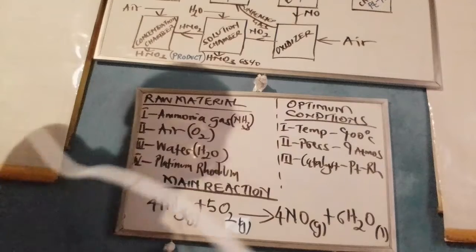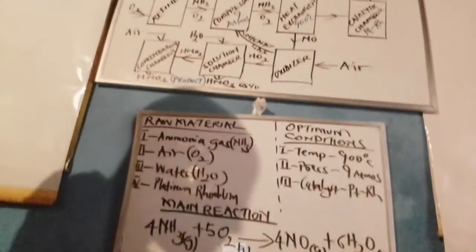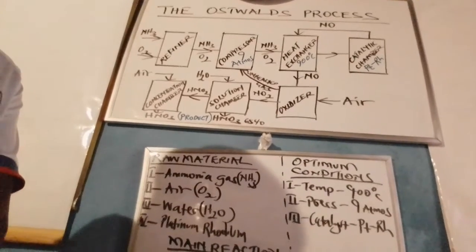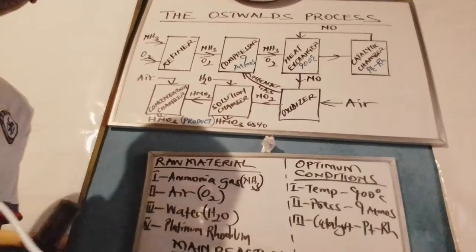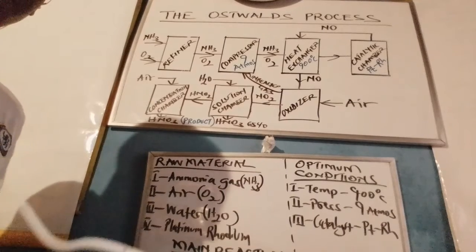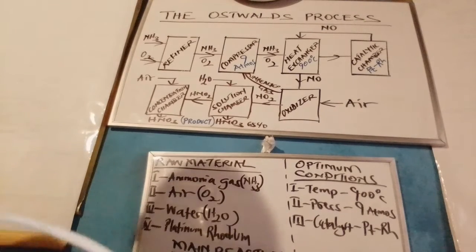Let us evaluate briefly the flow diagram representing the varied chambers for the Ostwald process. As illustrated, there are seven principal chambers: the refinery, the compressor, heat exchanger, catalytic exchanger, the oxidizer, solution chamber, and concentration chamber.